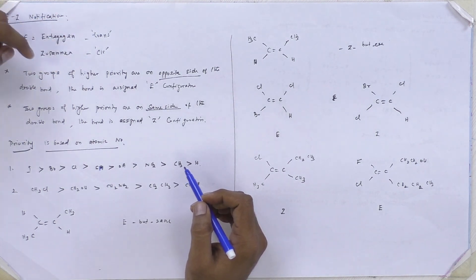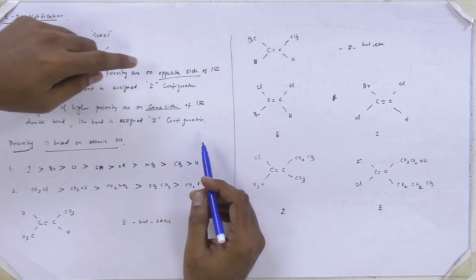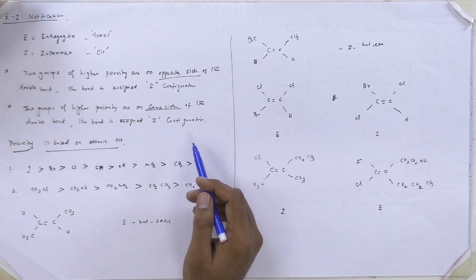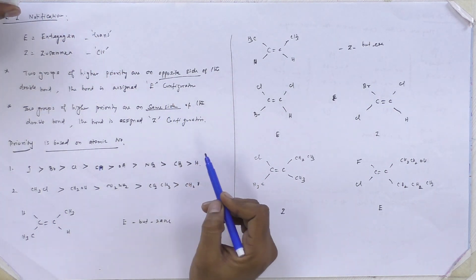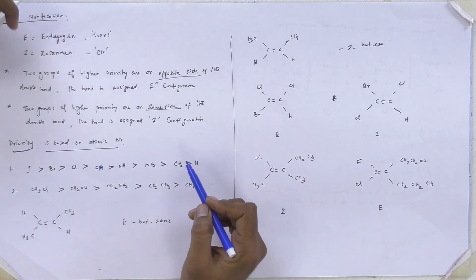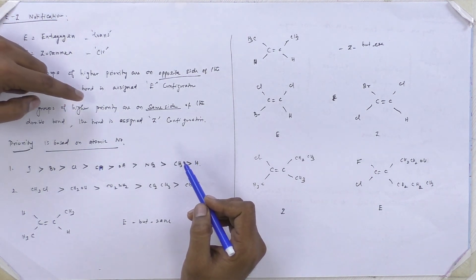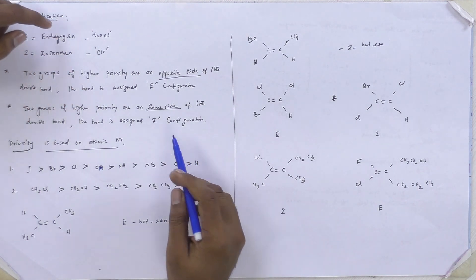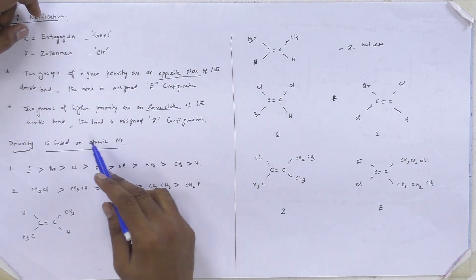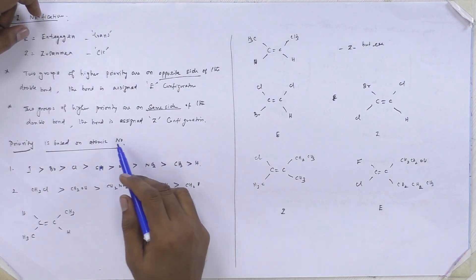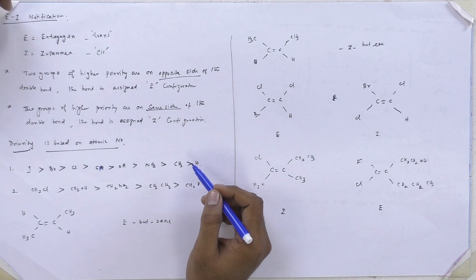So if the two groups of higher priority are on the opposite side of the double bond, the bond is assigned to be an E configuration. Similarly, if the two groups of higher priority are on the same side of the double bond, the bond is assigned to Z configuration.